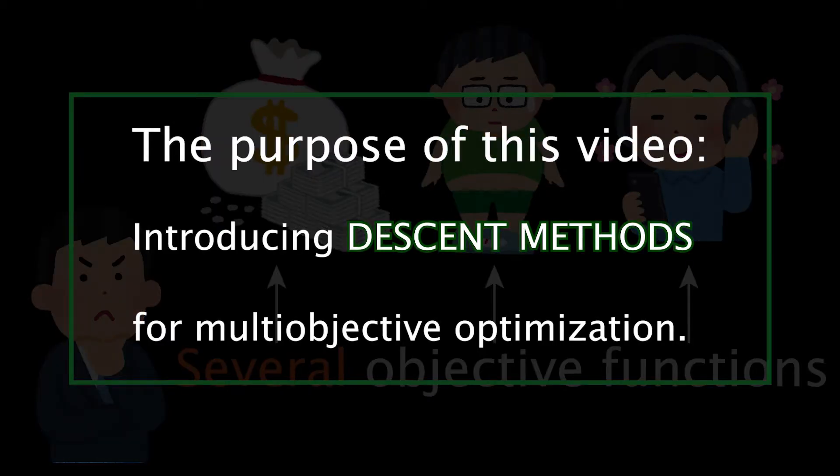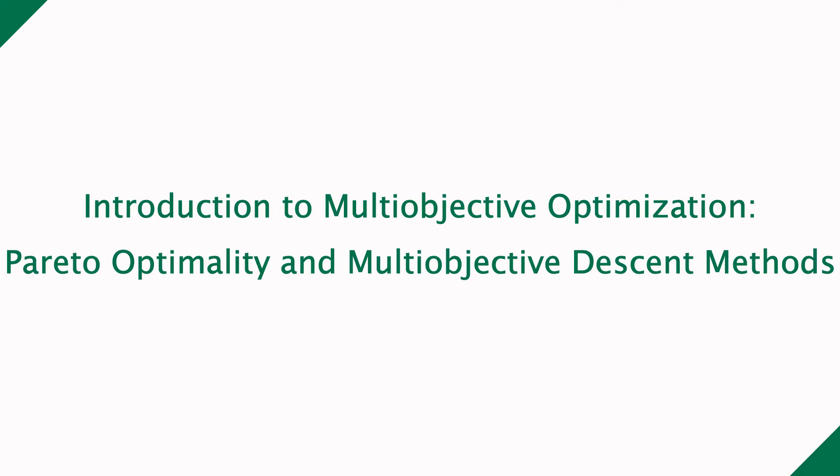In this video, I'll explain a type of solution of multi-objective optimization, which is called descent methods. Hey everyone, what's happening? Now, I'll introduce how to solve multi-objective optimization problems.